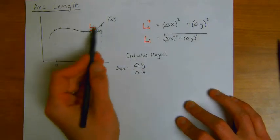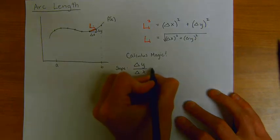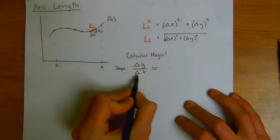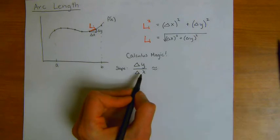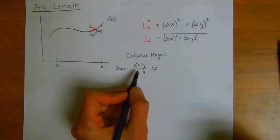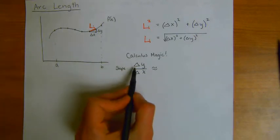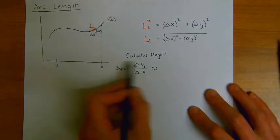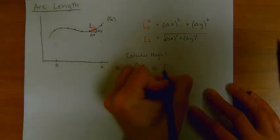And as our delta x gets smaller and smaller, we know from calc 1, that was a big concept, that change in y over change in x, our slope is given by the derivative of our function.